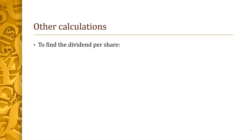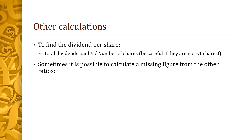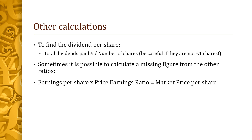Other calculations you might need: dividend per share is total dividends paid divided by the number of shares. Again, be careful if they're not one-pound shares, as the monetary amount and the number of shares will differ. Sometimes you may be required to calculate a missing figure using another ratio — for example, multiplying earnings per share by the price earnings ratio brings you back to the market price per share. That was something expected in the 2019 exam, so make sure you're okay with that.